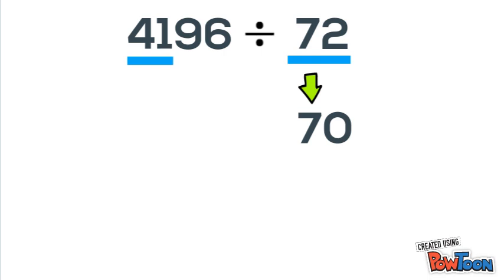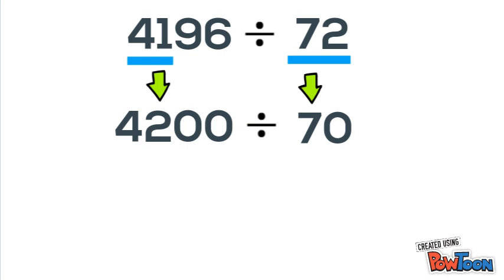Now we know 42 is a multiple of 7, so we're going to round our dividend to 4200. And that's the key: when you're rounding your dividend, you need to round to a multiple of the single digit represented in your divisor.